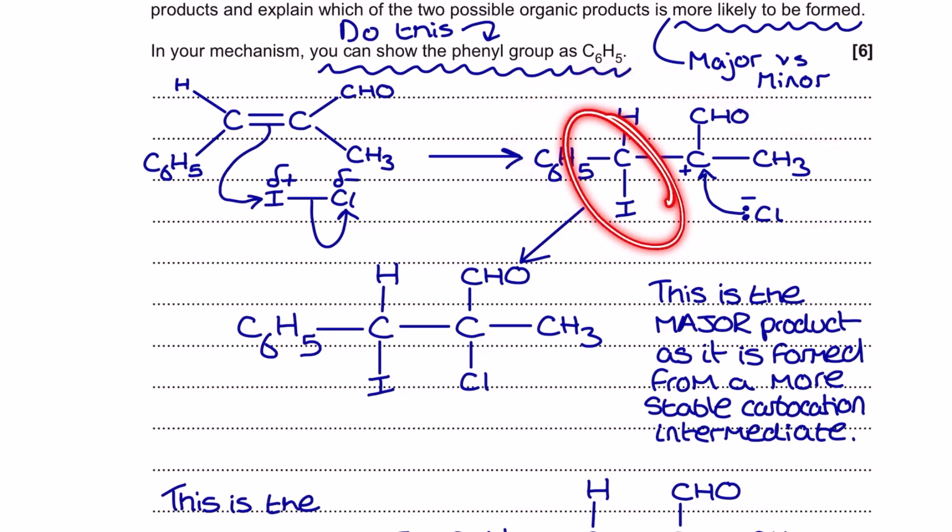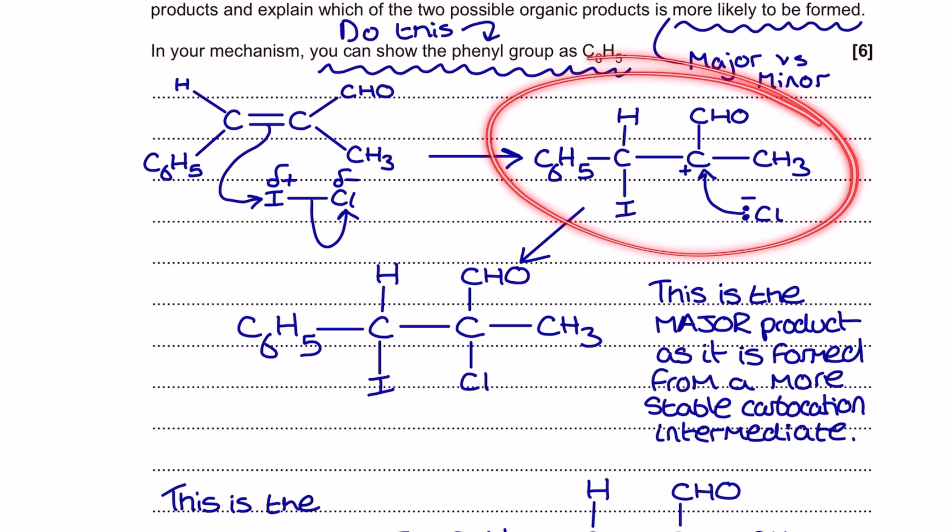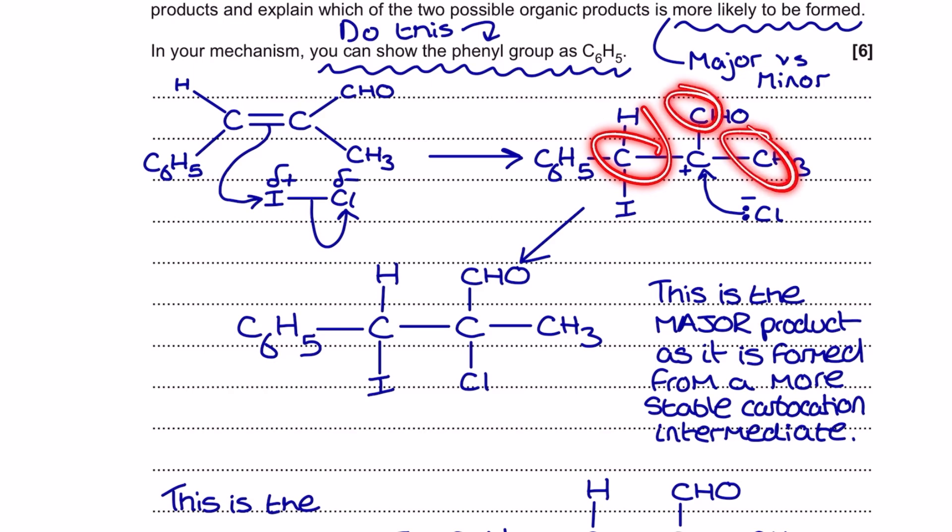I need to make sure that the iodine has gone over here to the left, and since I'm making the major product, I want to make the more stable carbocation intermediate here. And so this is a carbon atom with a positive charge bonded to three other carbon atoms directly.